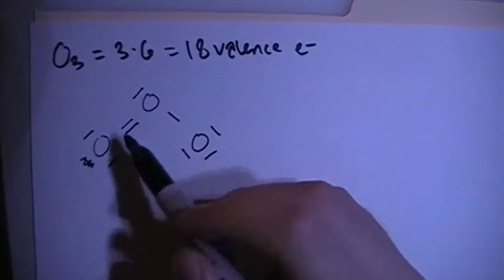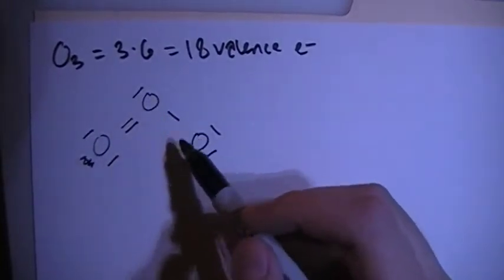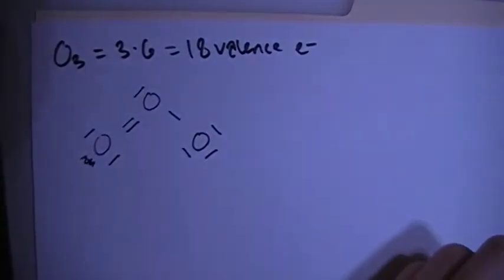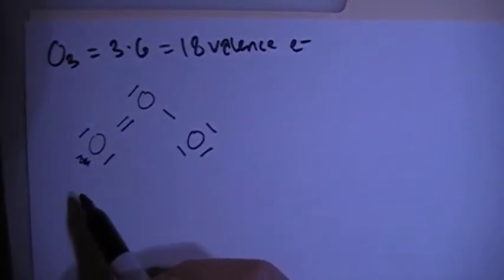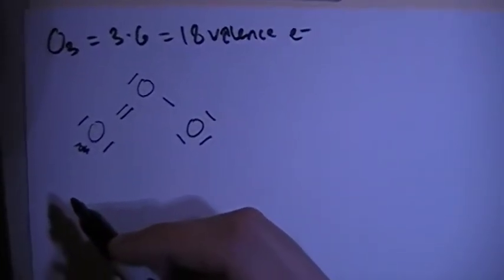Okay, so now there's 1, 2, 3, 4, 5, 6, 7, 8, 9, that's 18 electrons, and we can check the formal charges to make sure that this is the correct structure.